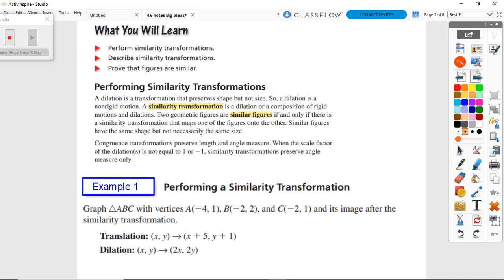Performing similarity transformations. A dilation is a transformation that preserves shape but not size - we change the size of these things. It's a non-rigid motion. A similarity transformation is a dilation or composition of rigid motions and dilation. Basically, just as you can see here in example one, we're just doing multiple things in the same question. This one says let's slide to the right and up, and then let's dilate it.